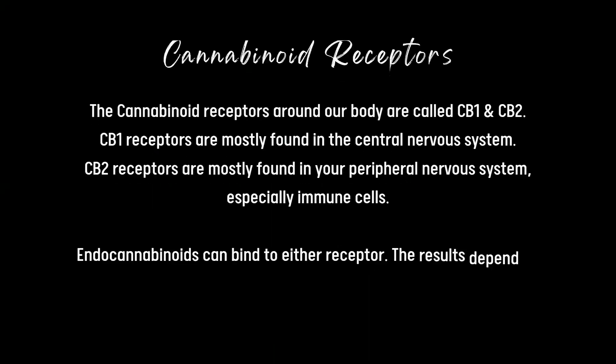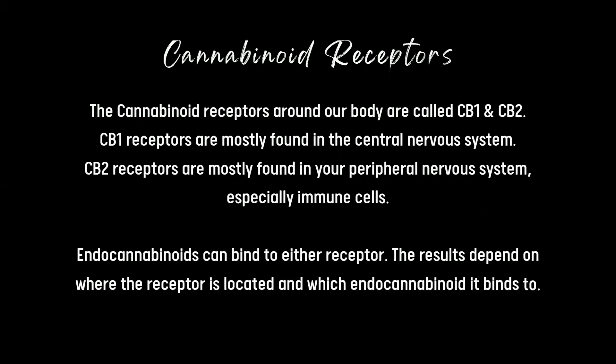The cannabinoid receptors around our body are called CB1 and CB2. CB1 receptors are mostly found in the central nervous system. CB2 receptors are mostly found in the peripheral nervous system, especially immune cells. Endocannabinoids can bind to either receptor. The results depend on where the receptor is located and which endocannabinoid it binds to.